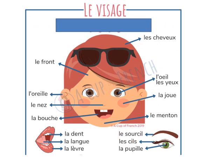Now we will see the picture of our face, called le visage in French. La chevelure — hair. Le front — forehead. L'œil — eye. Les yeux — two eyes. La joue — cheek. L'oreille — ear. Le nez — nose. La bouche — mouth. In the close-up of the mouth: la dent — teeth. La langue — tongue. La lèvre — lip. La sourcil — eyebrow. Le cil — eyelash. La pupille — that is the inside part of our eye.